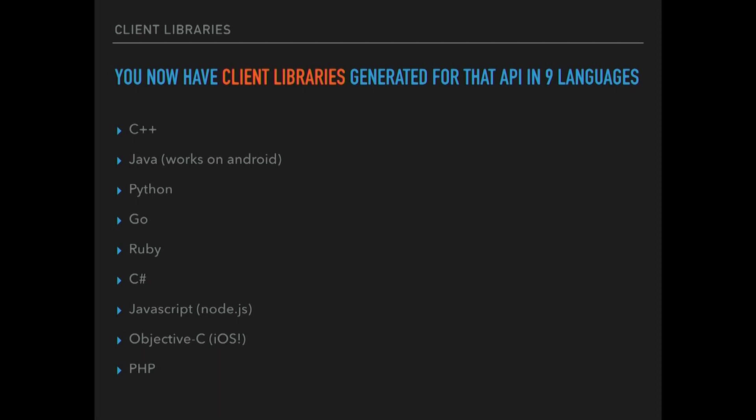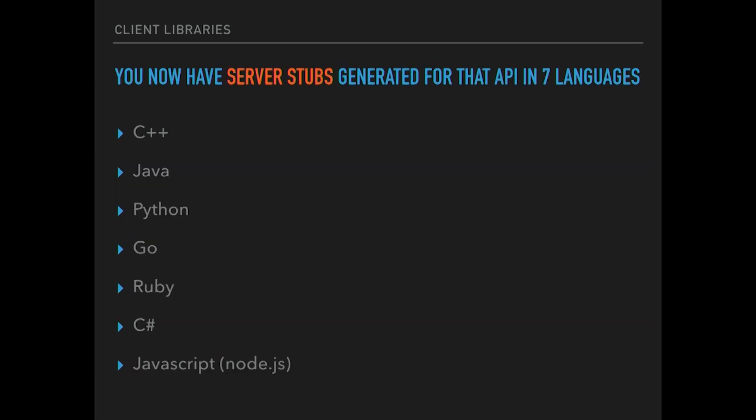Here's the crazy part: now you have client libraries in nine different languages just from that file. You download the protoc compiler and run it against that file, and it will spit out all of those different definitions. You do have to download plugins to generate Go and Java code, but it's pretty straightforward. You also have server stubs generated for that API in seven different languages — all generated by the same compiler.